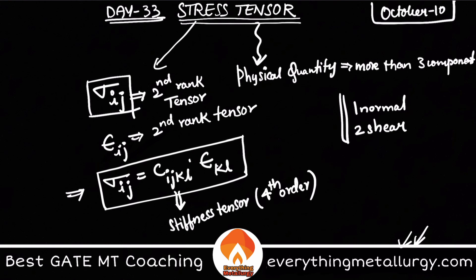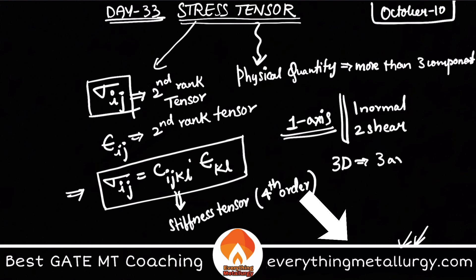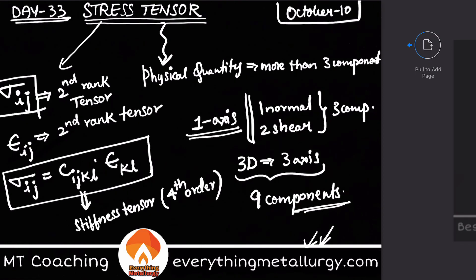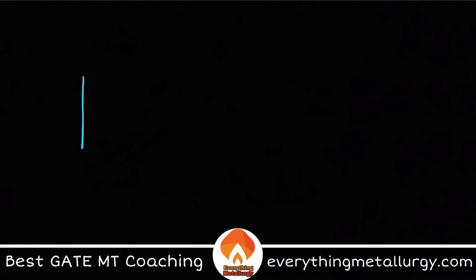We know that for one axis, you have three components — one normal and two shear. But we are dealing with 3D bodies, so we have three dimensions and three axes. In 3D, you have three times three, so a stress tensor has nine components in total. Let me take an example of a cube to explain.